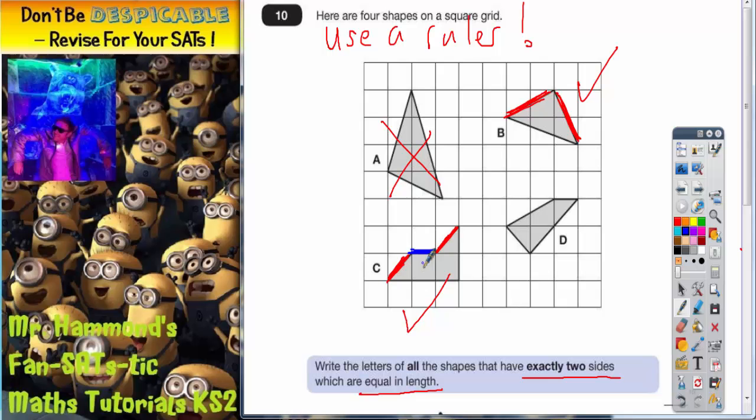So indeed this one does have exactly two sides which are equal. The blue one horizontally is a little bit shorter. So we are interested in shape C as well.